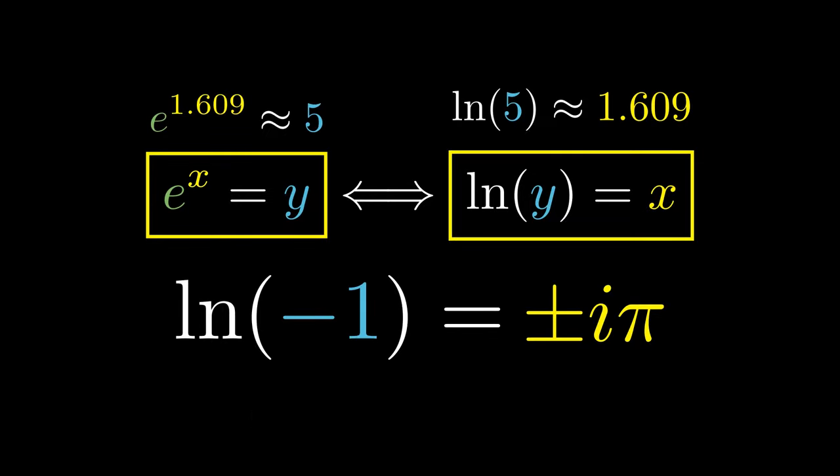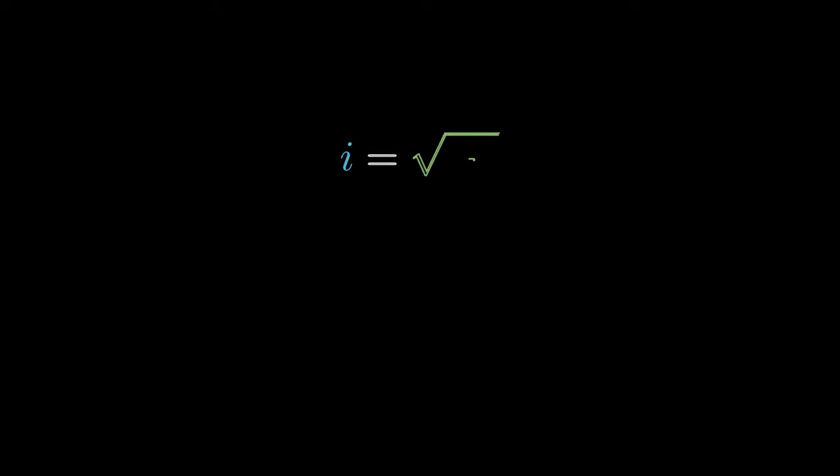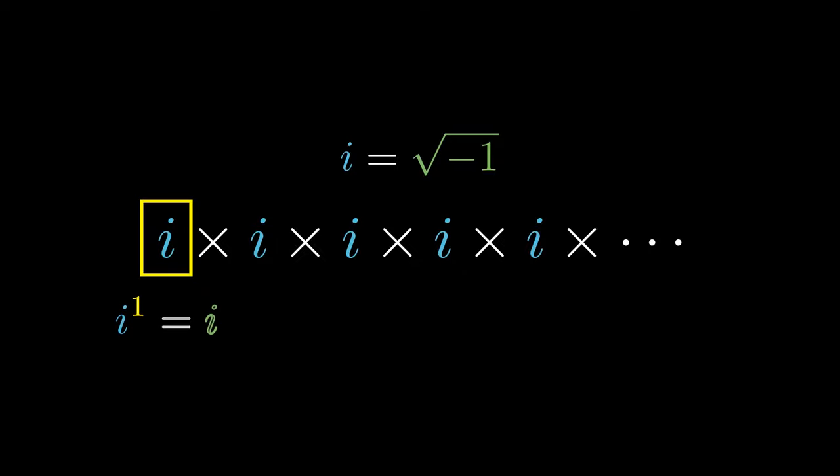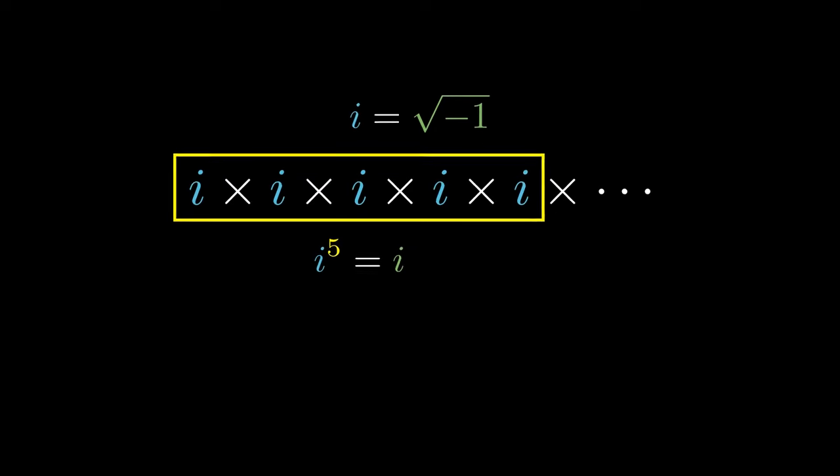The star of complex analysis is i, known as the square root of negative 1. Just like before, i raised to the 1 means multiplying i once, i to the power of 2 means multiplying i twice, giving negative 1, multiplying i three times gives negative i, and multiplying i four times gives 1. Multiplying i a fifth time returns to i.